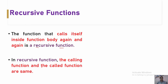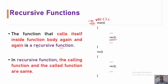In a recursive function, the calling function and the called function are the same. Consider that we have declared one function whose name is 'rec'. Inside the main function, we call this rec function. When the compiler starts execution, it first executes main, and when it reaches the function call, the program is transferred from the main function to the rec function. So right now, main is the calling function and rec is the called function.